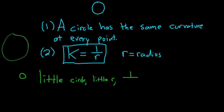So you have 1 over a little number, which is a big number. So if you have a little circle, you have a little R, so you have a big curvature, a big K. Because it's 1 over a little number, and that's a big number.